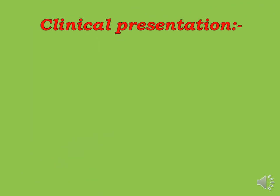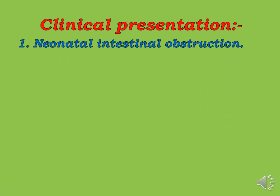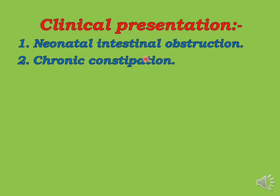The clinical presentation usually has one of the following features: either neonatal intestinal obstruction presenting in neonatal life as failure to pass meconium, abdominal distension and vomiting; or chronic constipation — some patients present later in childhood with chronic constipation, especially if they have short-segment Hirschsprung disease.